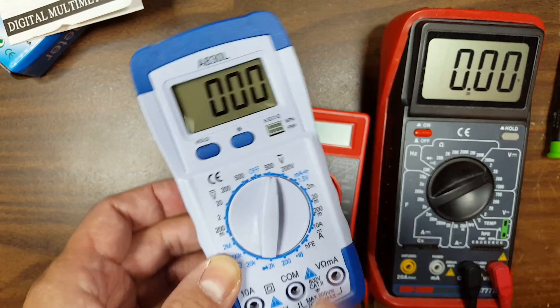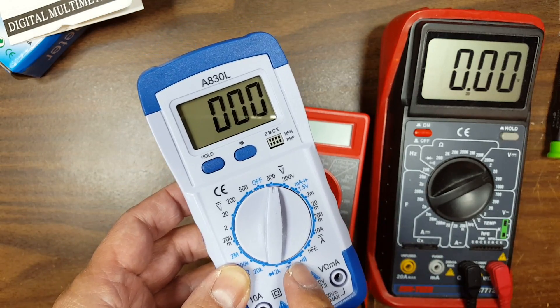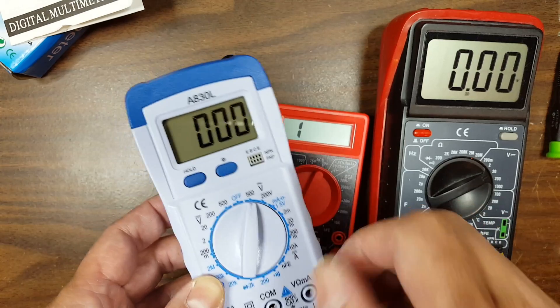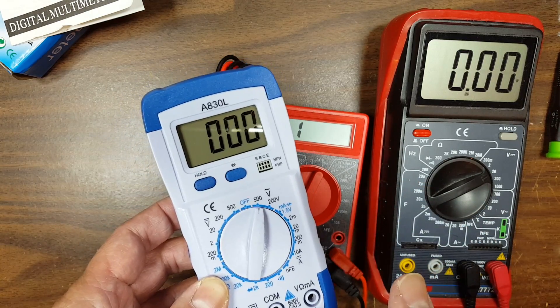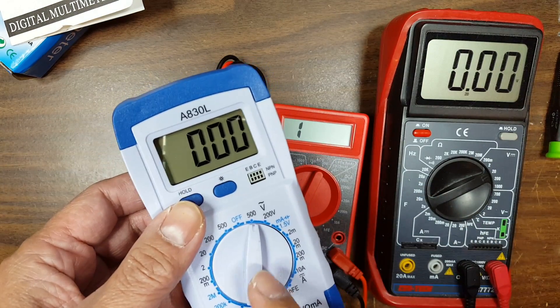I want the multimeter to have a beeper so when you're doing a continuity test you could actually hear it and not have to actually look at the screen. That's why this is a little bit more expensive at $3.62.